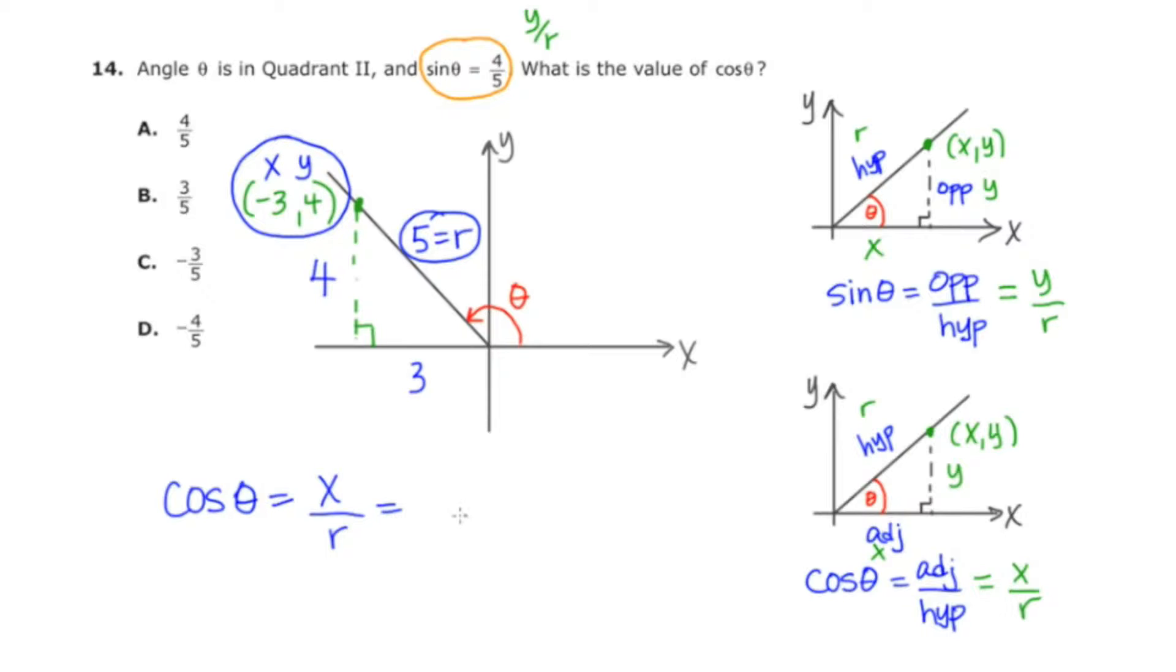So what I need specifically is the ratio of x to r. So x is negative three, r is five, and the answer is negative three fifths, which is on our list. It's letter c. Number 14 is c, negative three fifths.